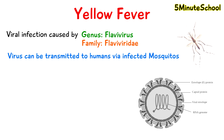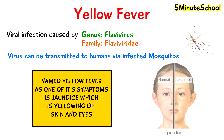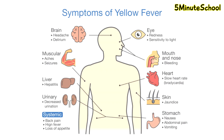The reason this viral infection is named yellow fever is because one of the symptoms of it is called jaundice, which is where we have yellowing of the skin and eyes. Other symptoms also include having a headache, fever, muscle pain, nausea, vomiting, and also fatigue.